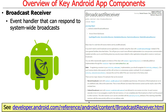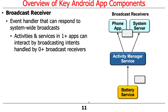Broadcast receivers are essentially event handlers that are responsive to events that can be sent throughout the Android system. This is an interesting feature that's been improved over time because they were a gigantic security hole for many years. They've tightened it up and it's a little more restricted than it was originally, but it still plays some important roles. One or more apps can interact by broadcasting intents that are then handled by zero or more broadcast receivers — meaning there may be nobody who cares, or there might be multiple entities interested.